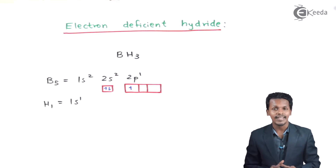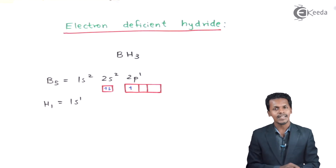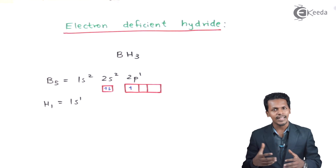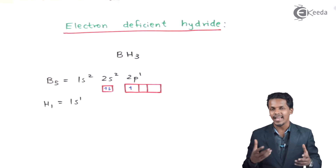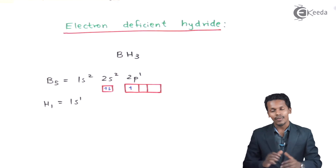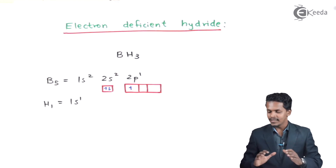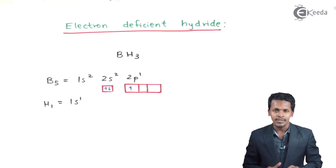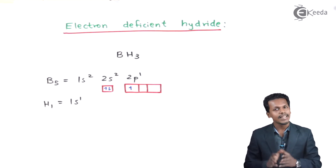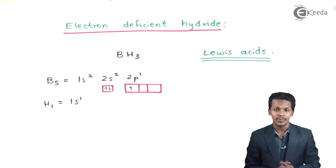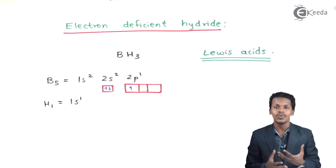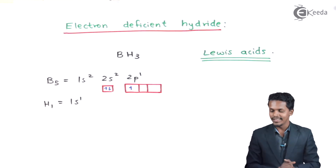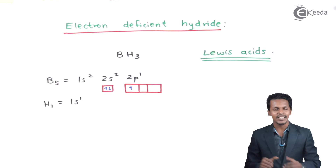Although electron-deficient, BH3 is still stable, which is why boron hydrides typically form diborane, B2H6. Because of the electron deficiency, BH3 acts as a Lewis acid — a species that has the capability to accept a lone pair of electrons from another molecule. This is how electron-deficient hydrides are characterized.